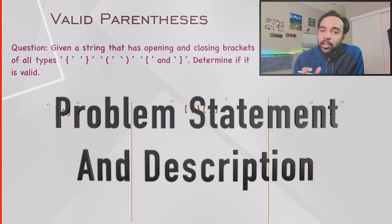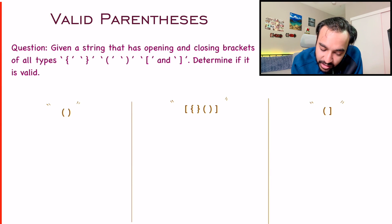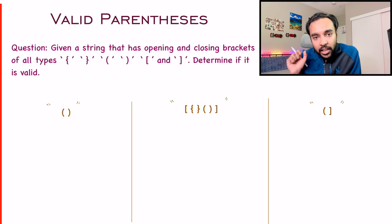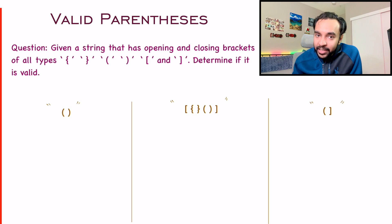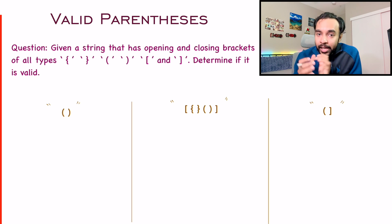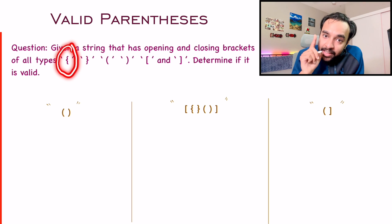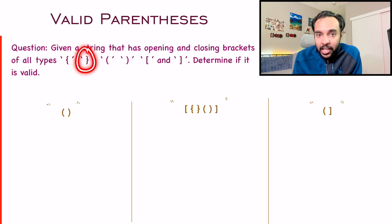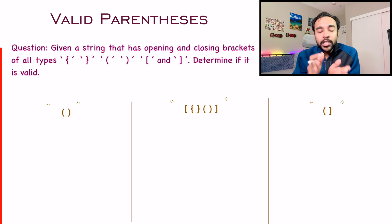Let us try to make sure that we're understanding the problem statement correctly. In this problem, you are given a string that has both the opening and closing brackets of all the different types — curly braces, normal brackets, and square brackets. You have to determine which of these strings are valid. The only rule you should know is that if you are opening a certain kind of parentheses, then you have to close it as well.